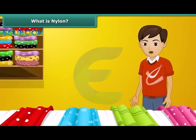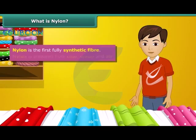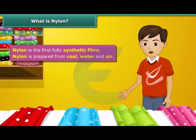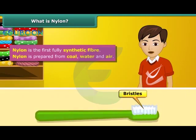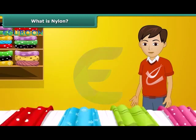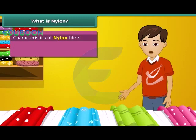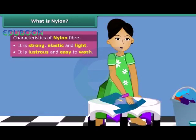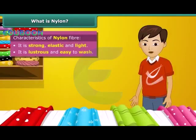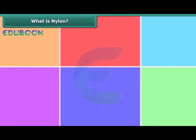Do you know what is the first fully synthetic fiber? It is nylon. The very first nylon product was a toothbrush with bristles. Nylon fiber is strong, elastic, light, lustrous and easy to wash. It is used in making many articles such as socks, ropes, tents, car seat belts, sleeping bags, curtains, etc.